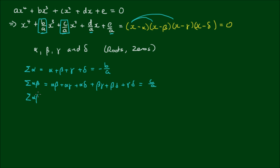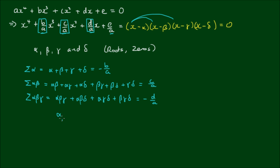Then the sum of the triple products of the roots — alpha·beta·gamma plus alpha·beta·delta plus alpha·gamma·delta plus beta·gamma·delta — is equal to the negative of d/a, the negative of the linear coefficient. And the product of all four roots, alpha·beta·gamma·delta, is equal to e/a.